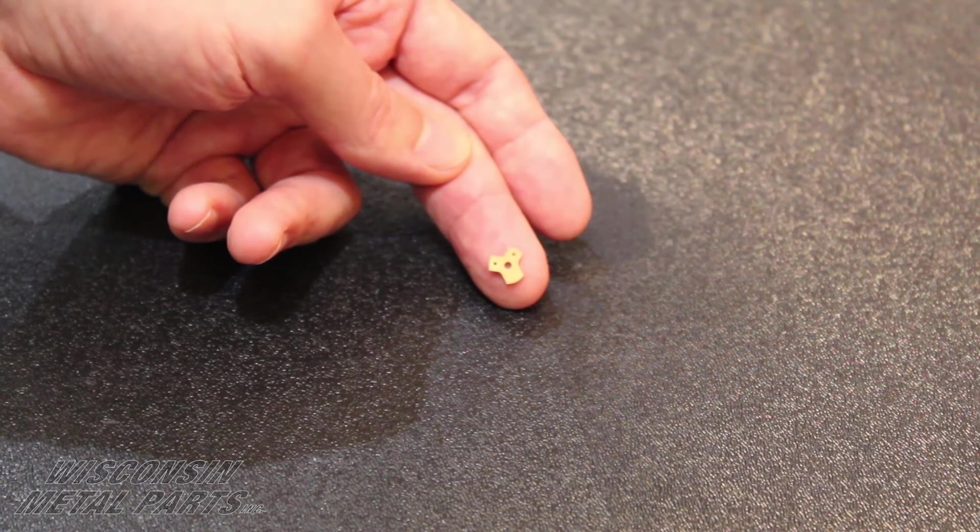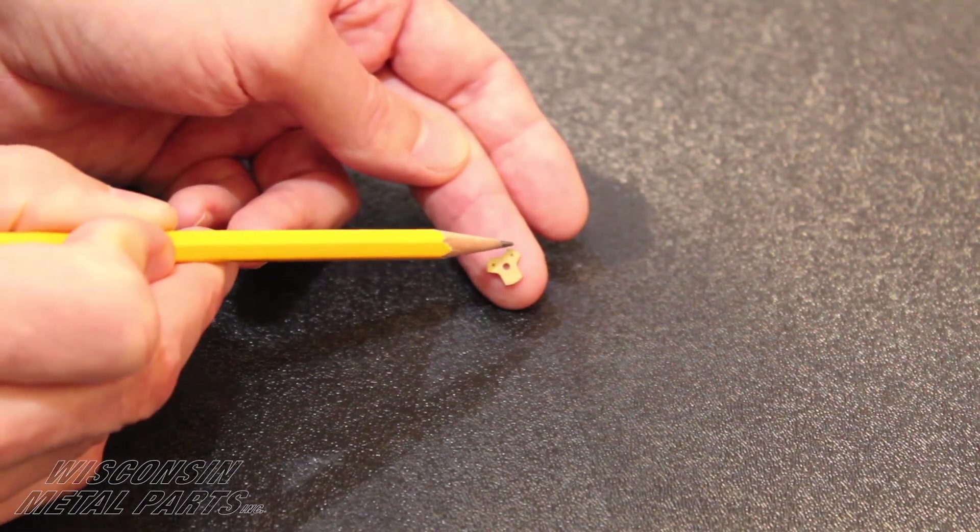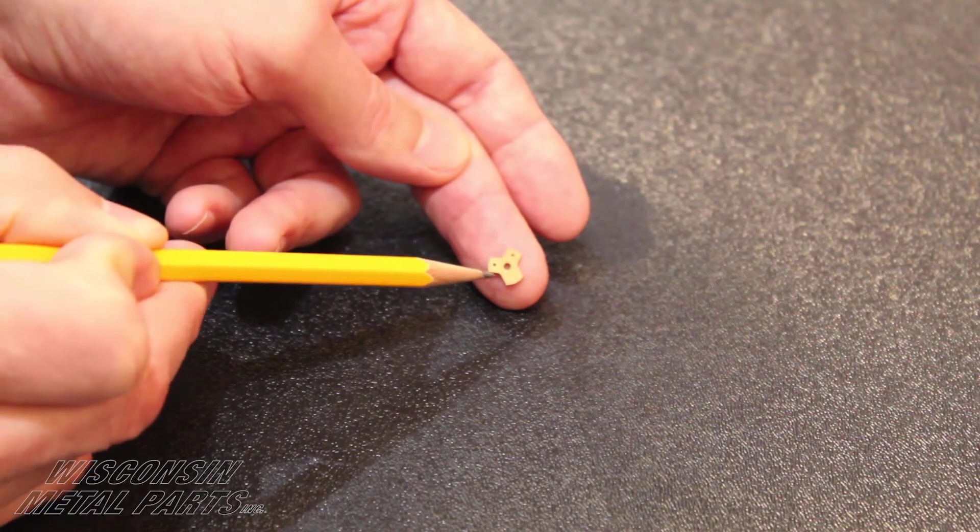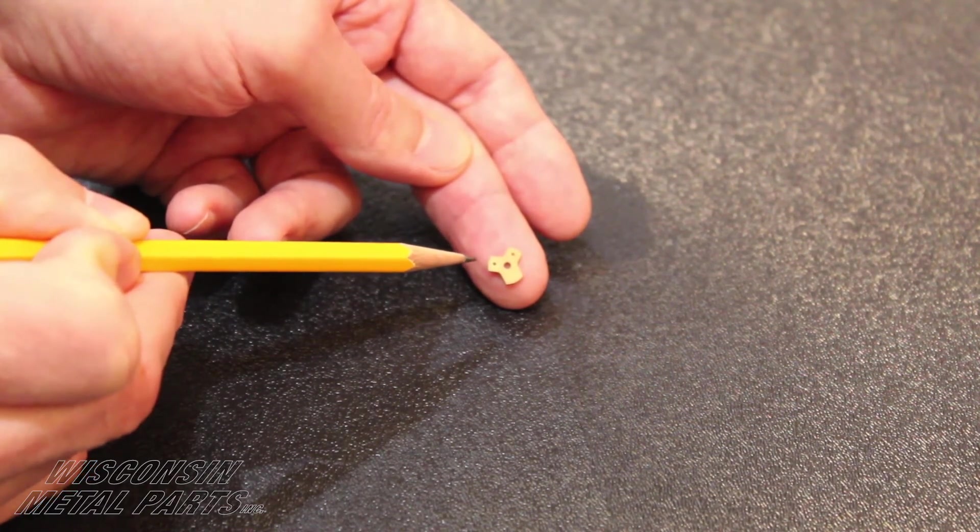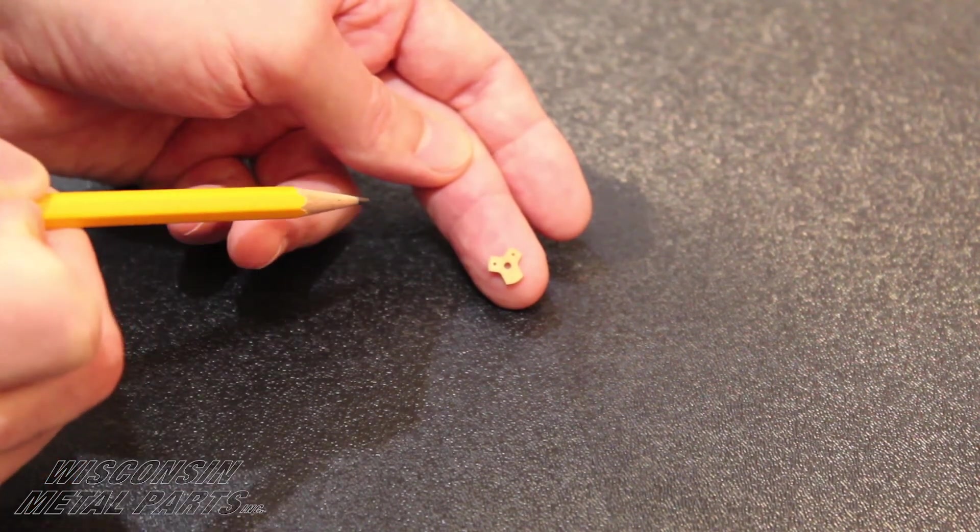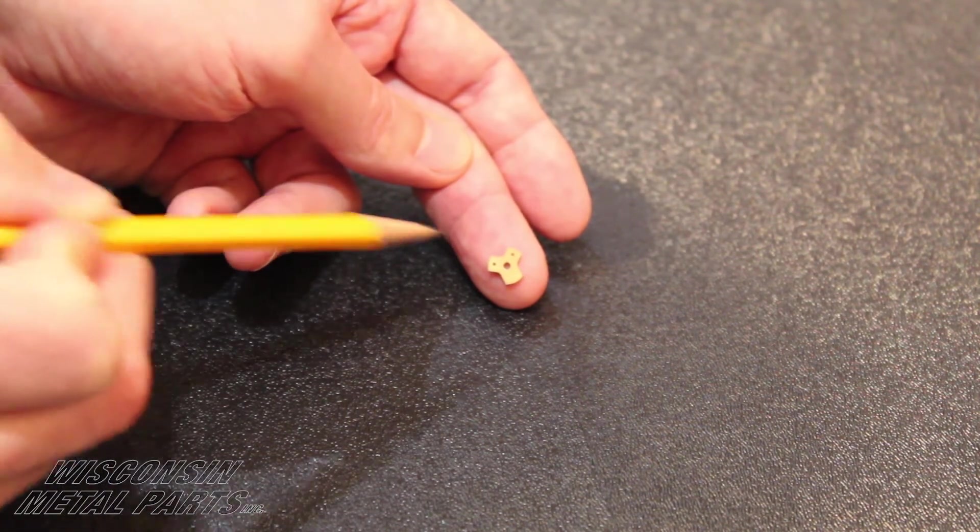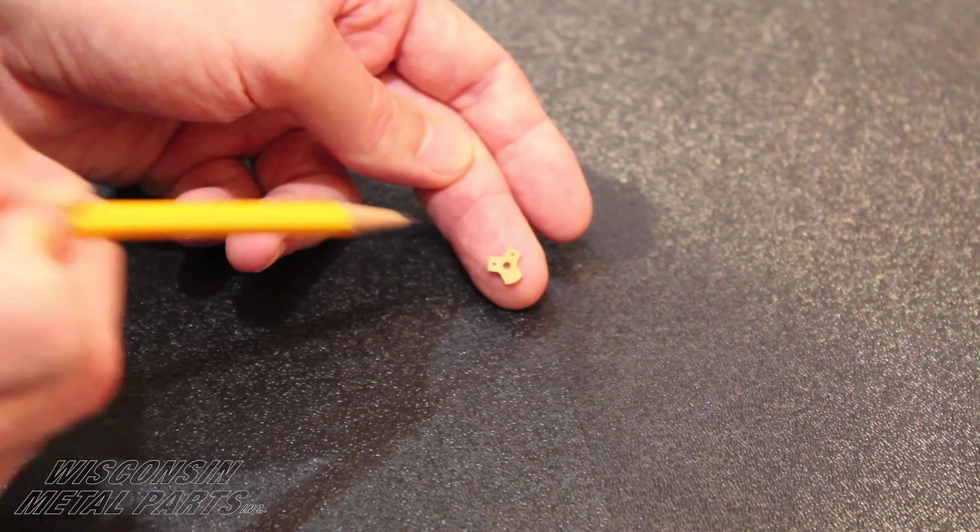Some of the unique challenges with this part are that we are piercing holes that are smaller in diameter than the material thickness and we also have to hold a plus three tenths minus zero on the hole diameter tolerances. So some very tight tolerances on some very small holes.